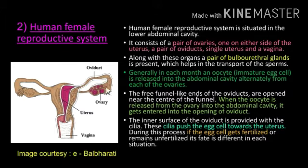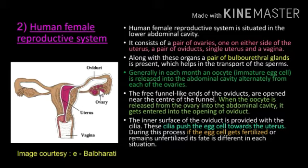The egg cell gets entry through this opening into the oviduct. The inner lining of the oviduct is provided with numerous cilia, and these cilia are constantly beating towards the uterus so that the egg cell moves continuously through the oviduct up to the uterus.